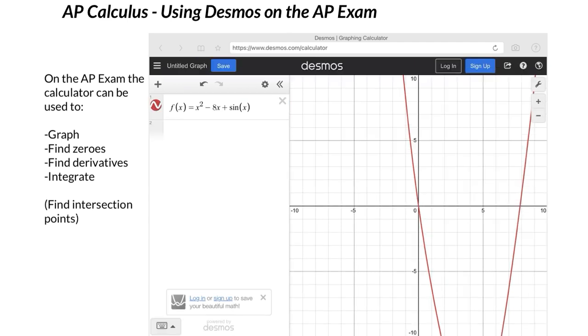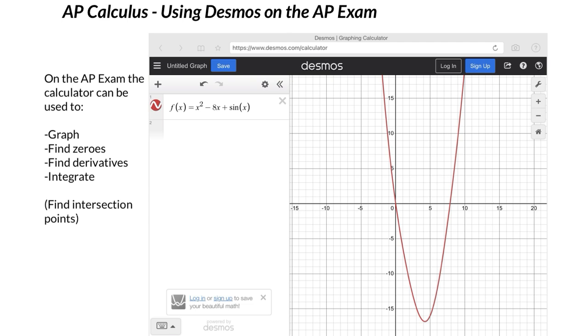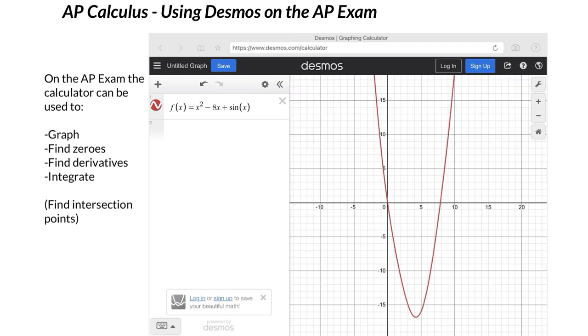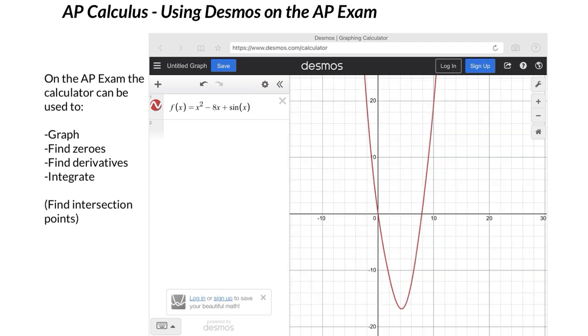You can literally just use your finger to find the zeros. Of course you can zoom in or zoom out on the graph by pinching with your finger if you have a touch screen, or you can use the little plus or minus to zoom in and zoom out.